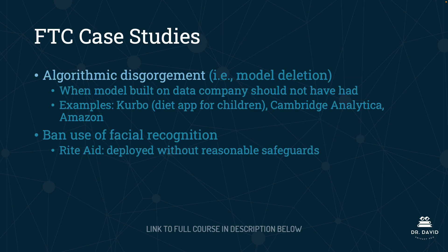There are a few case studies you need to know for the AIGP exam. The first concerns the term 'algorithmic disgorgement,' which essentially means model deletion. The FTC, under at least three cases, has required companies to delete models that were built on data the company should not have had — because that data was not collected in accordance with current statutes and regulations.